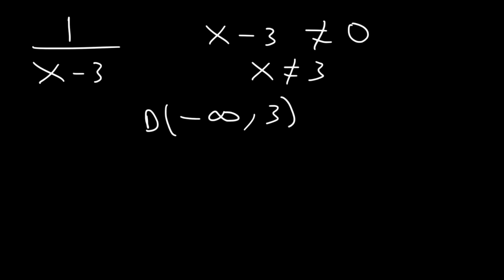So here's another example. Let's say if we have the function 1 over x minus 3. x minus 3, the denominator cannot be 0. So x cannot be 3. Therefore, the domain is everything except 3. That's how you write it.